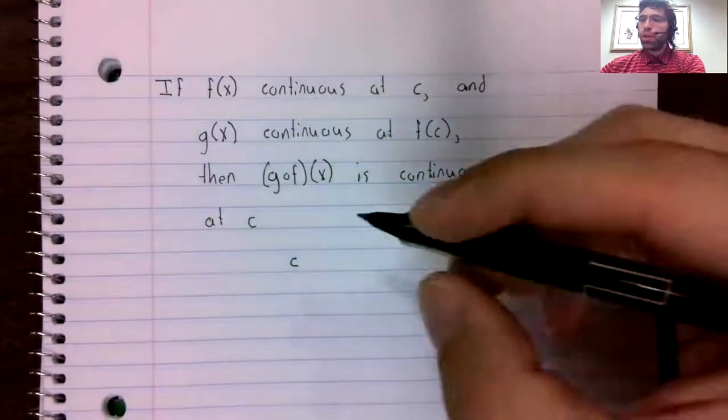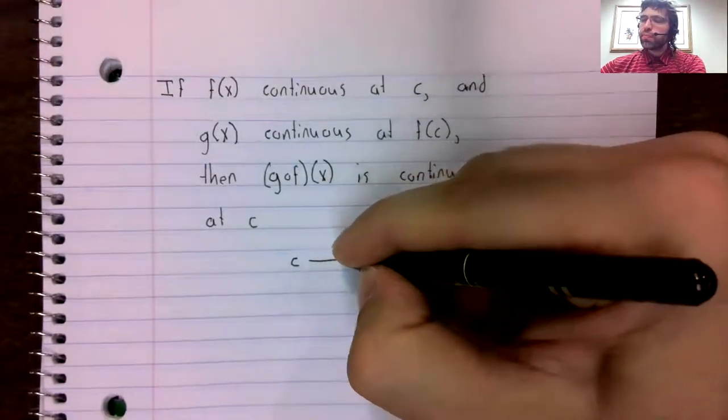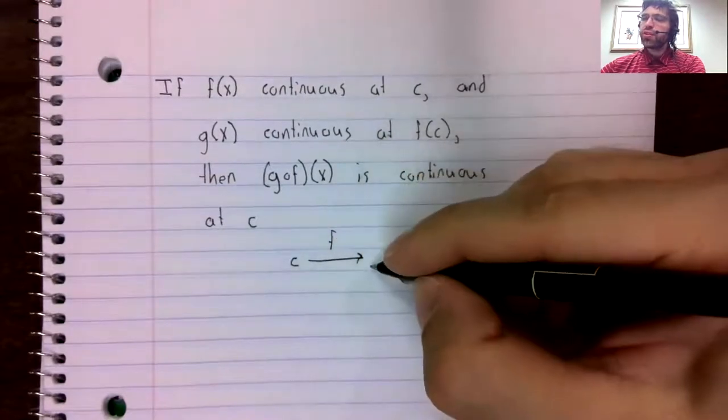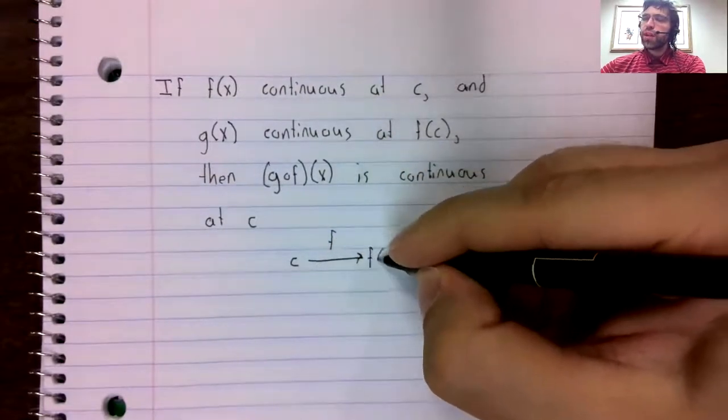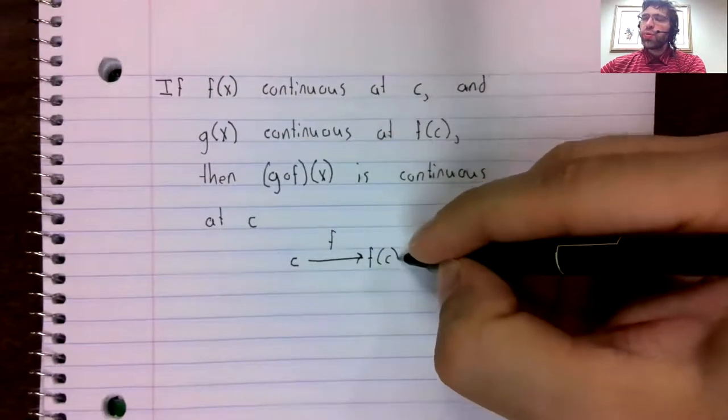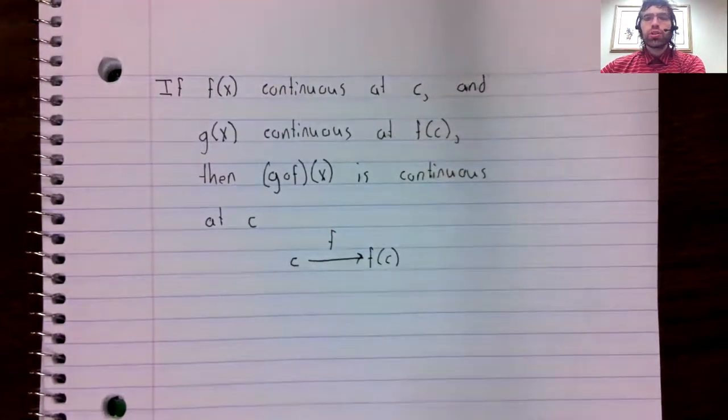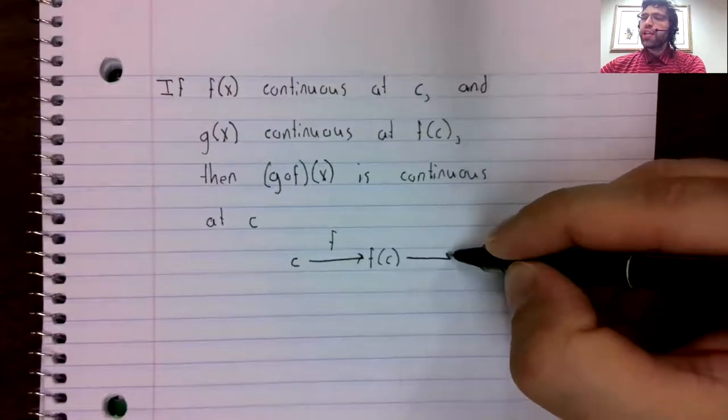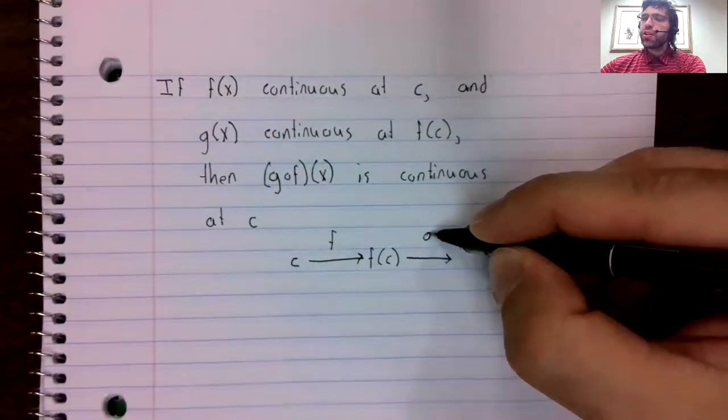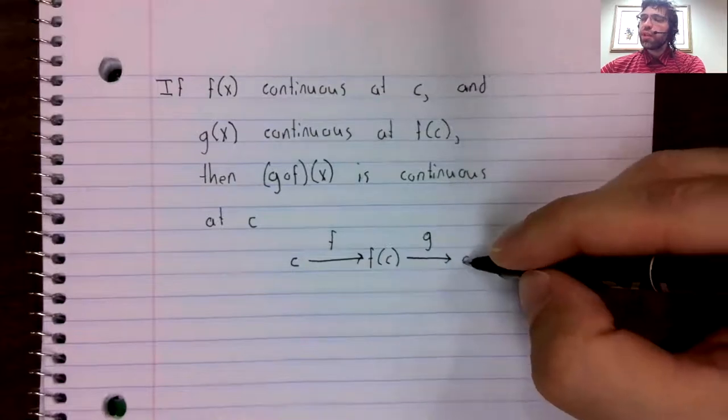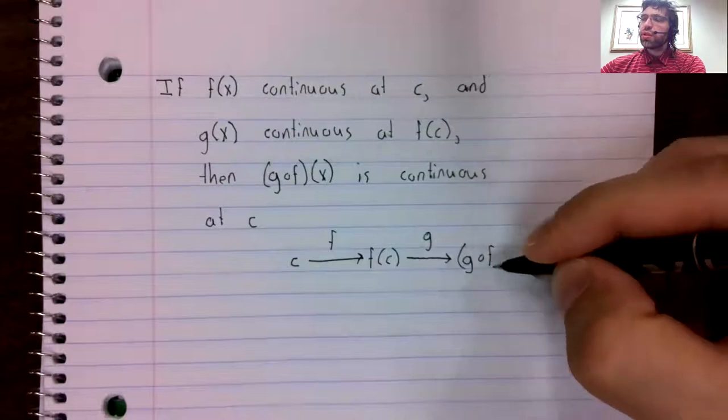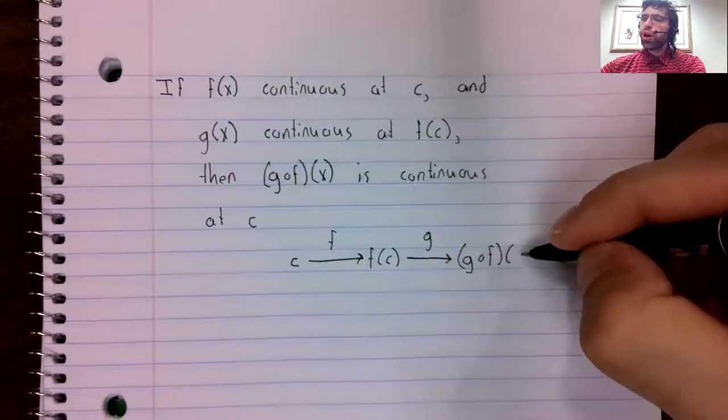Well, we start with an input and we apply f to it. And we get an output. And now we apply g to this, and we get our composition.